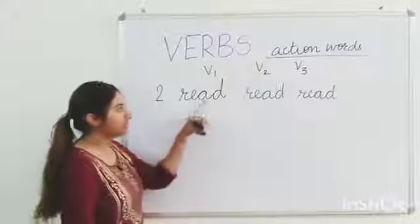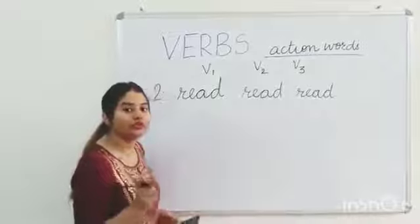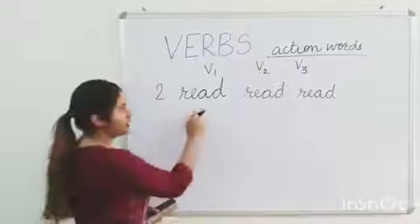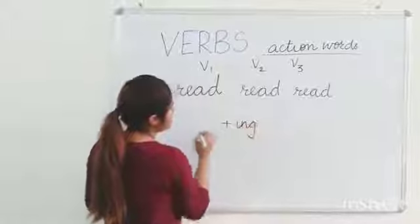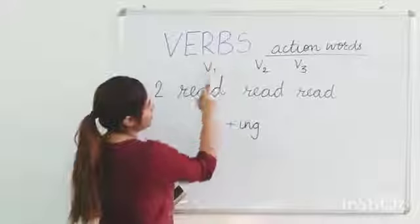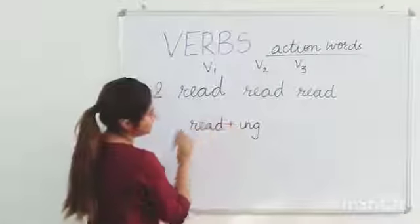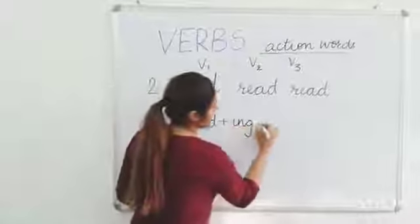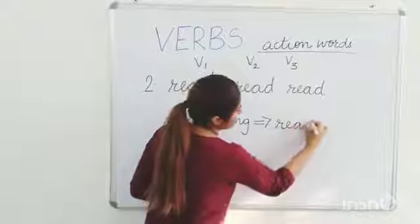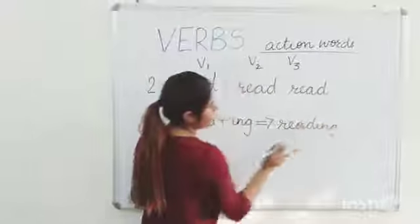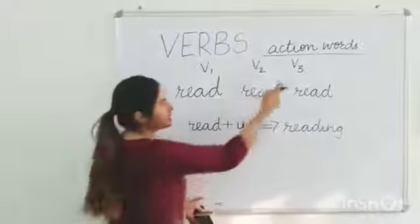Speak after me: read, read, read. And how do we make the ING verb form of the same? By simply adding ING to V1. What is V1? Read. So read plus ING becomes reading. It does not become 'reading' with a different pronunciation — it becomes reading.